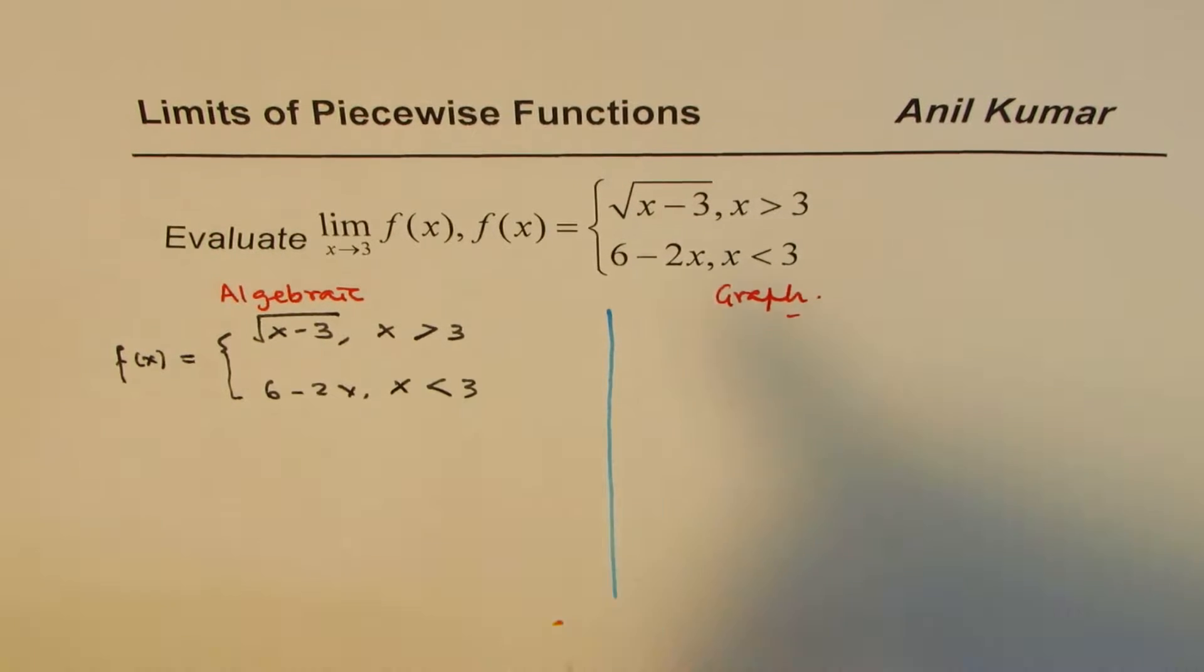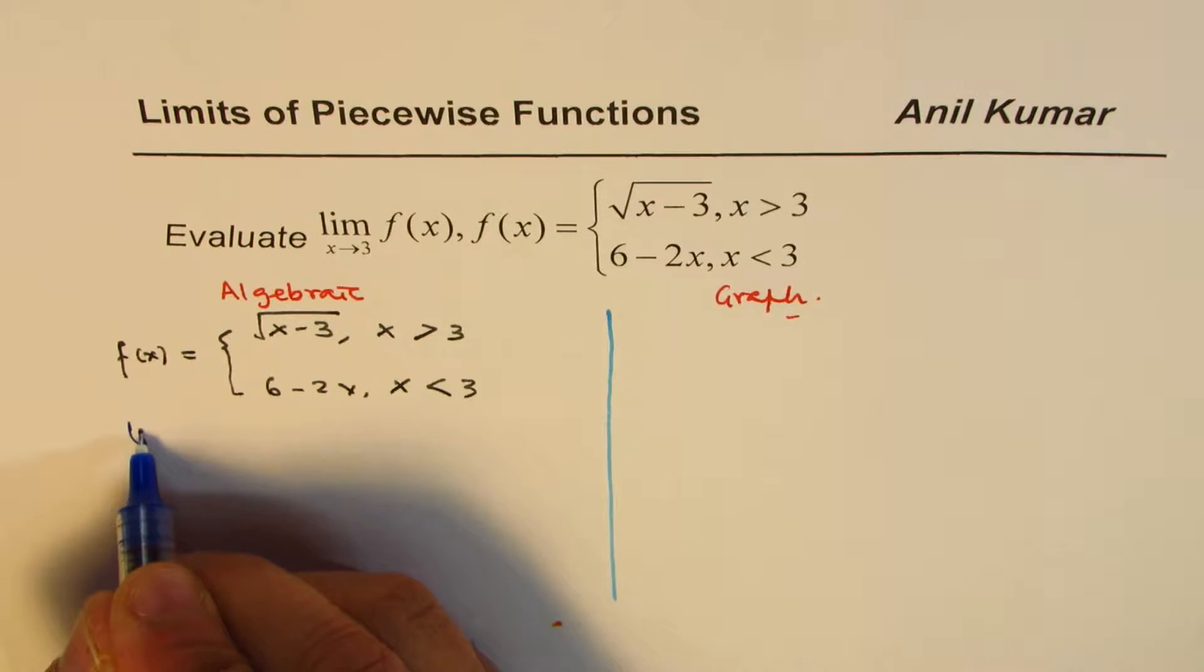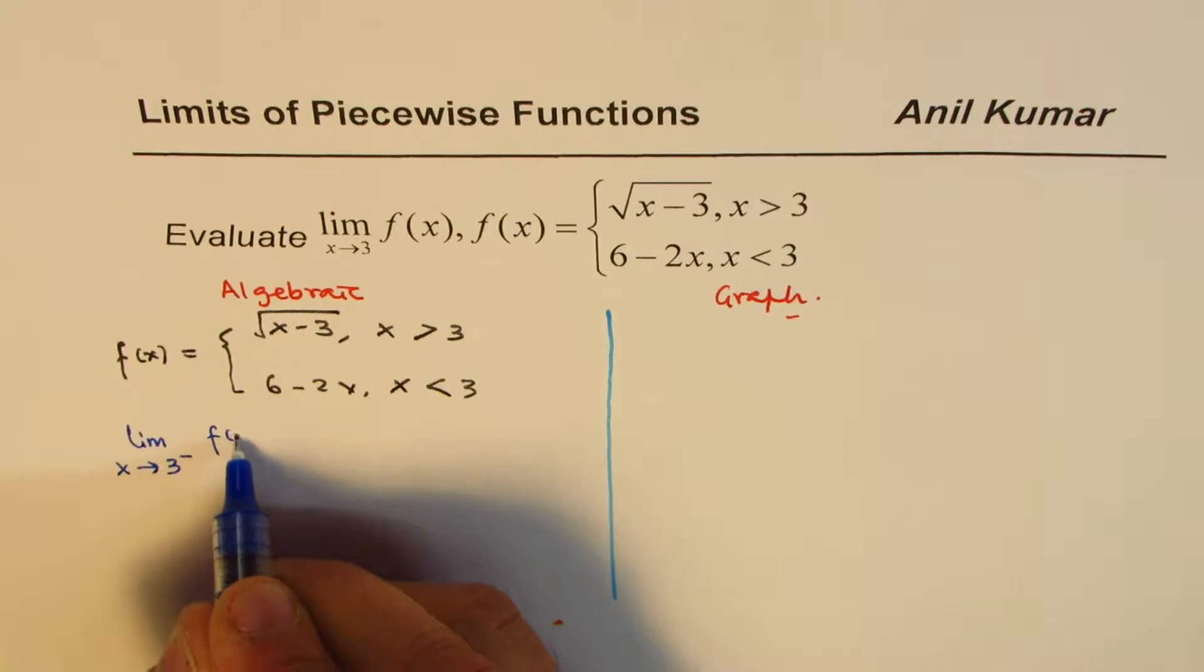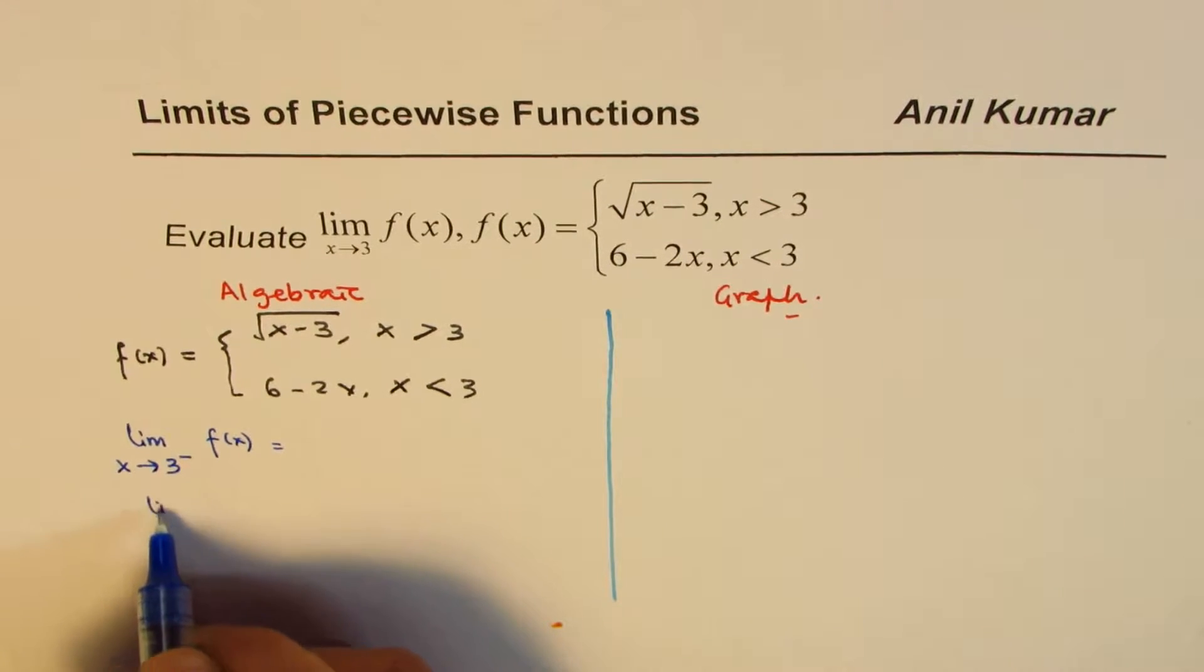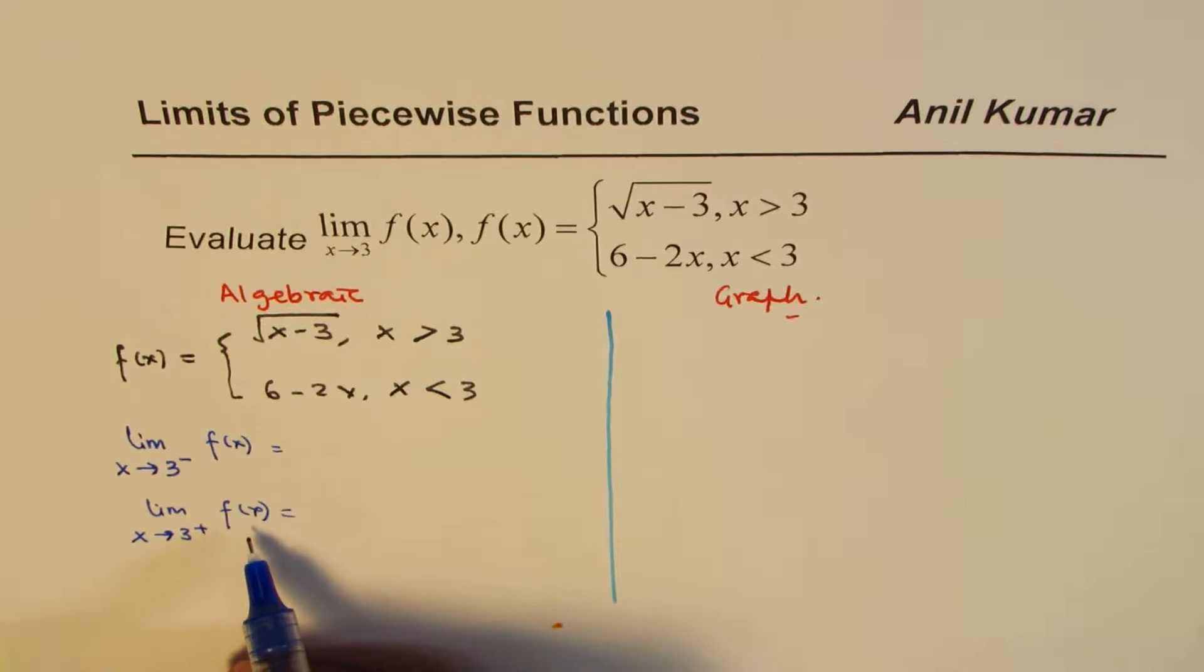Now, let's find the limits. We have to find limit at 3. So when you have to find limit at 3, it is better to find limit at 3 approaching from the left side for f of x and also limit as x approaches 3 from the right side for the same function. Now, if both the limits are same, then the limit exists. Otherwise, it does not exist.